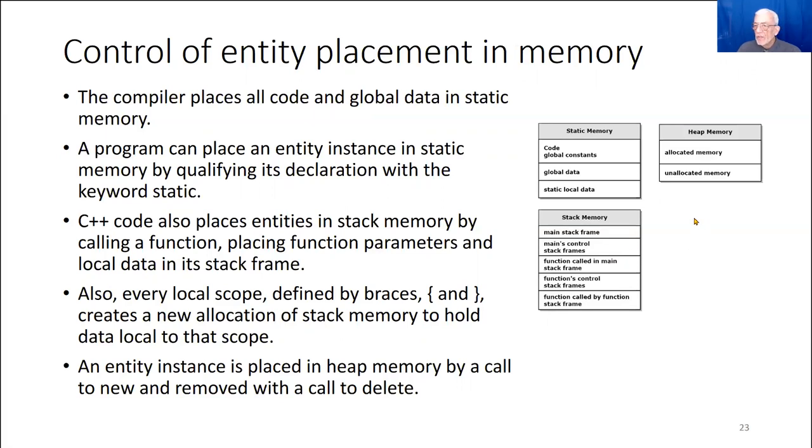Finally, you place a variable in heap memory by calling new, specifying the type you want to create. And you may initialize it to give it a value. This is an unnamed type, but you have a pointer. The call to new returns a pointer to that memory. And that variable lives until the program calls delete on that pointer, and that removes the allocation.